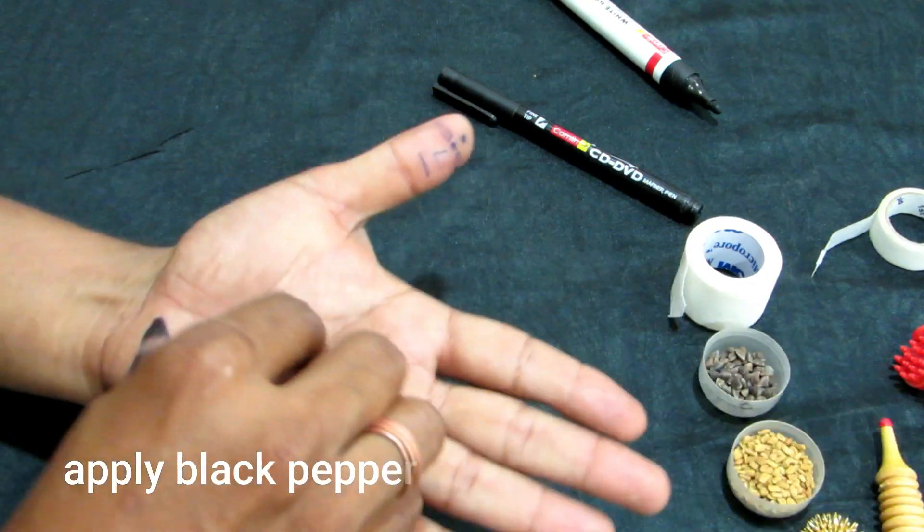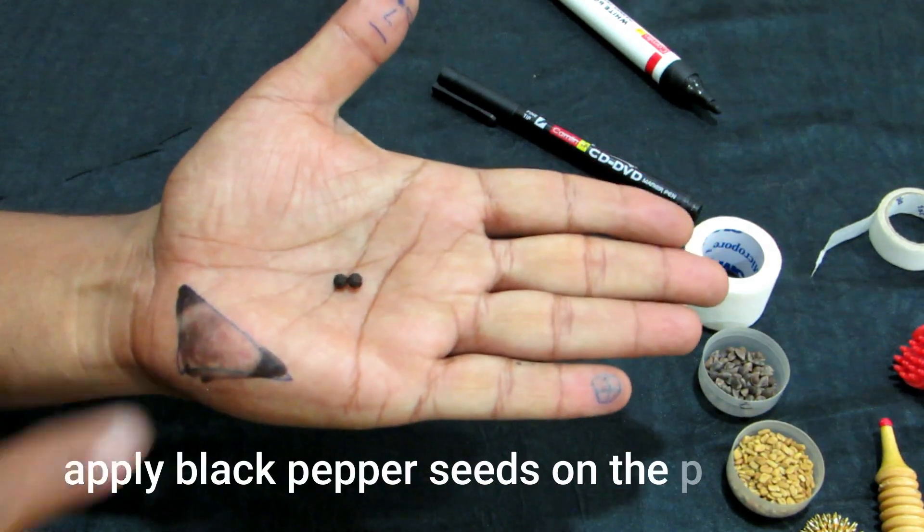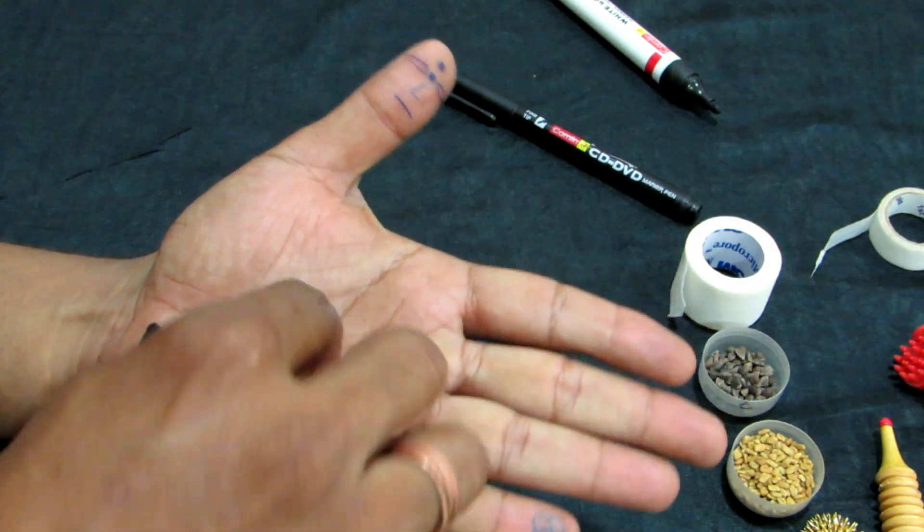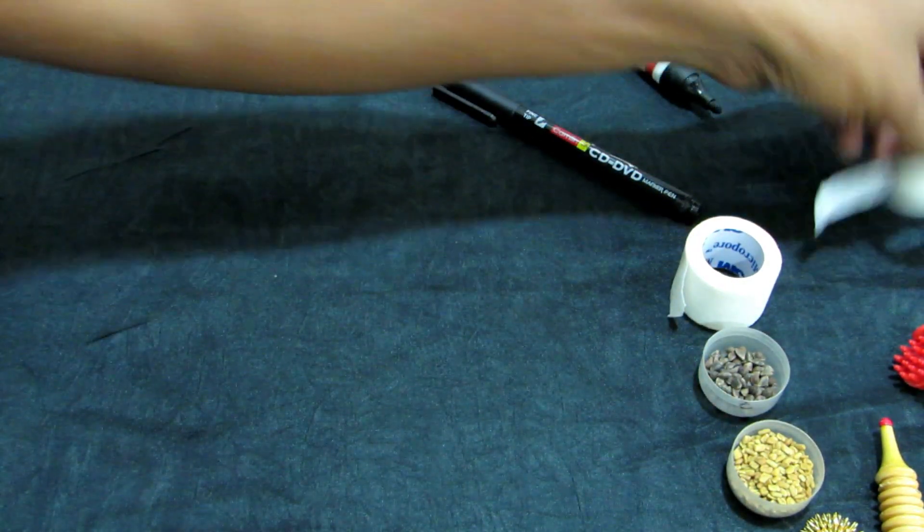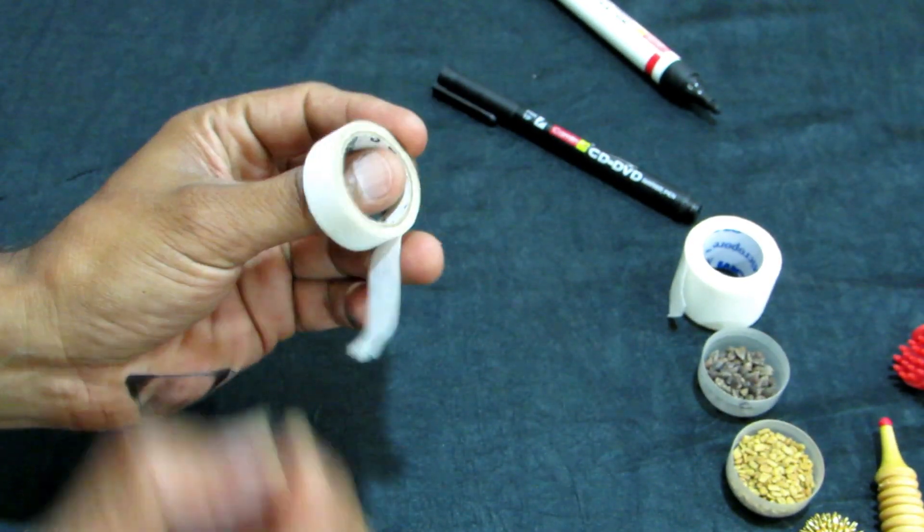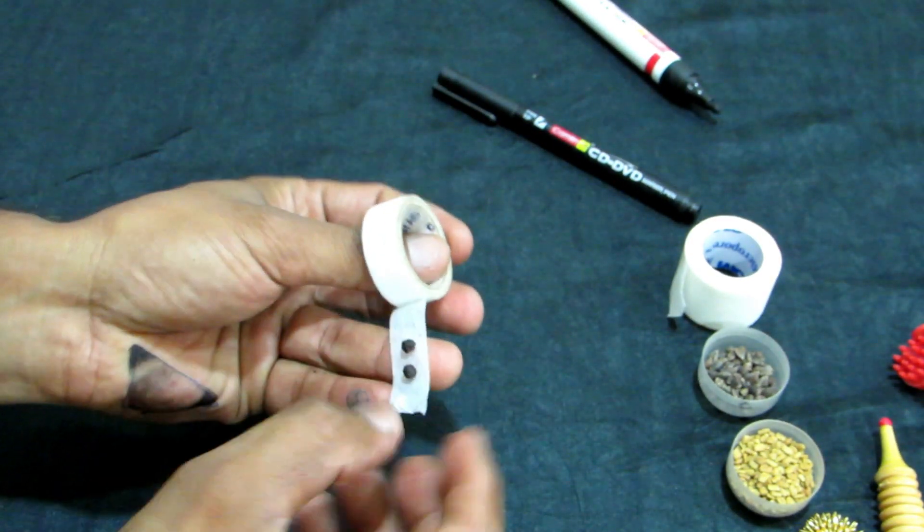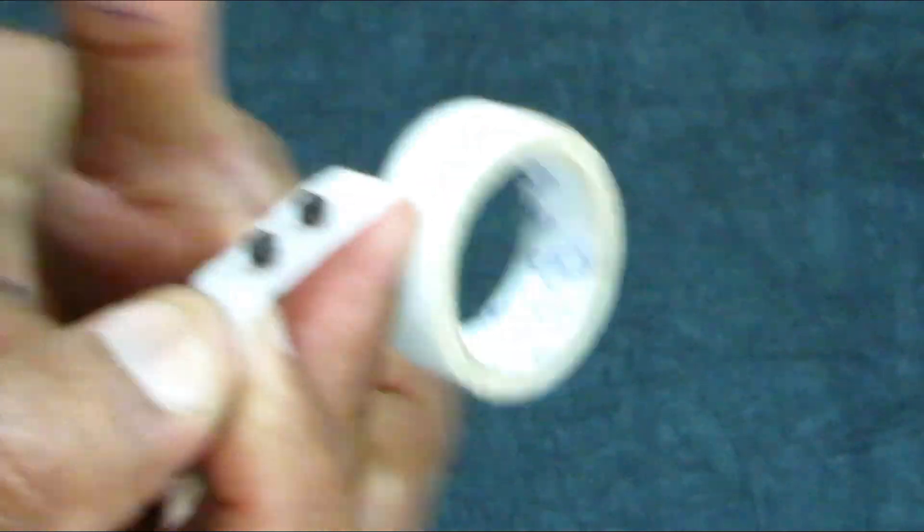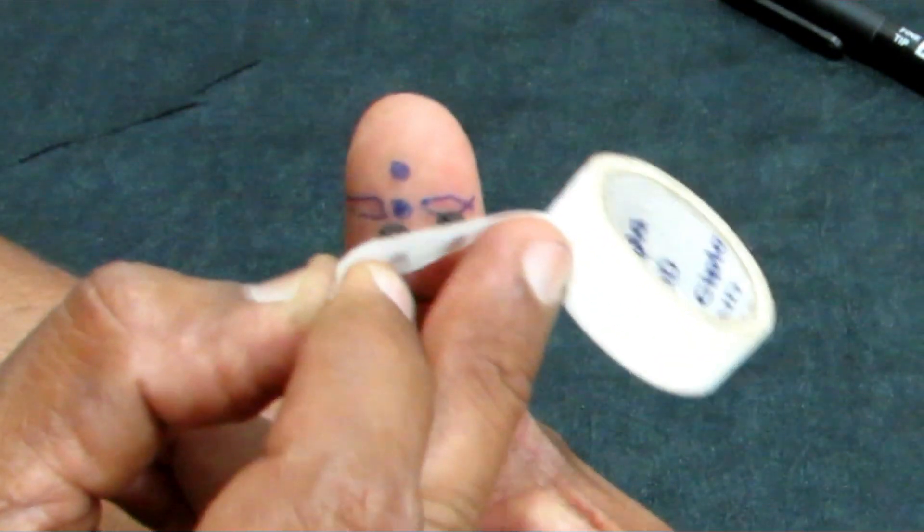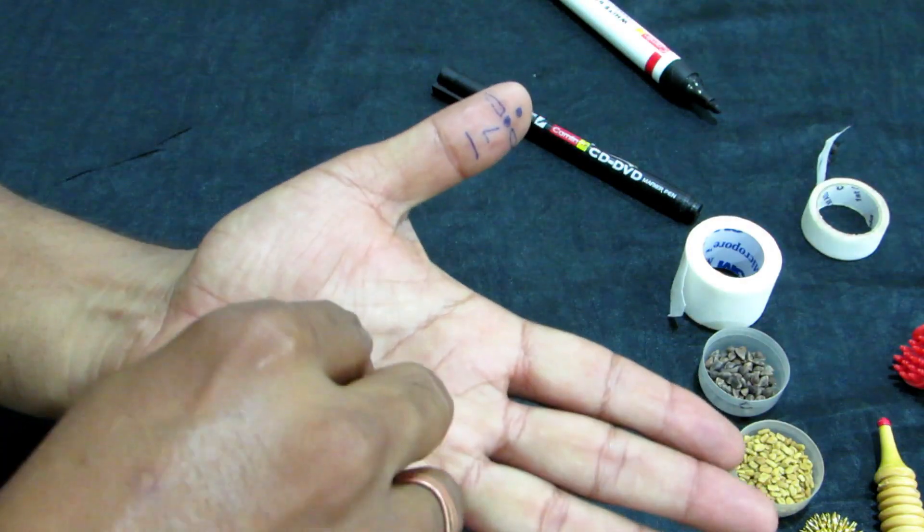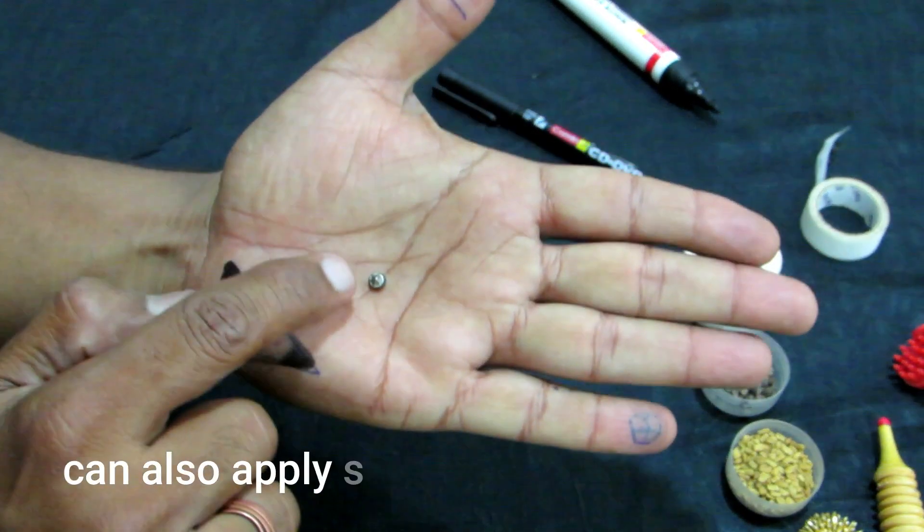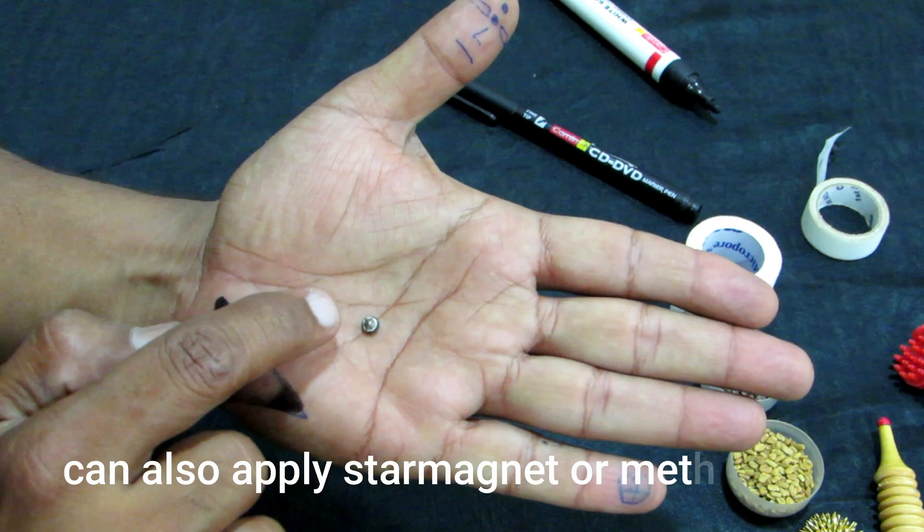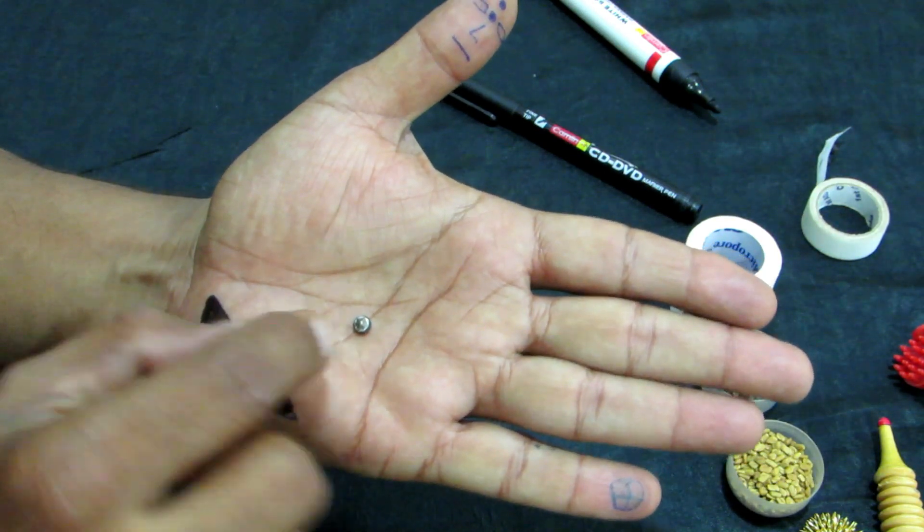You can apply black pepper seeds on these two eyes with the help of a surgical paper tape like this, or you can apply star magnet on the main eye correspondence point.